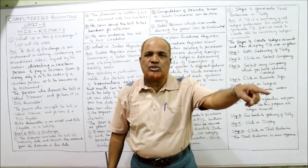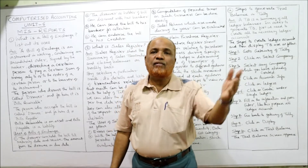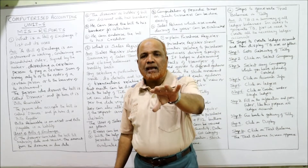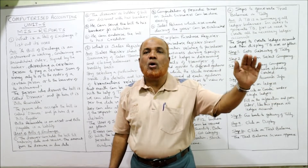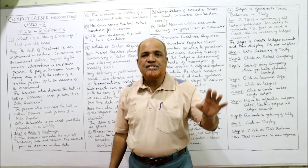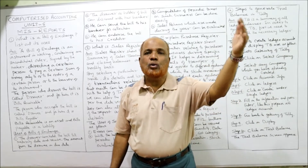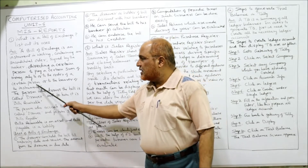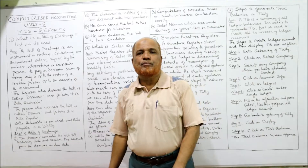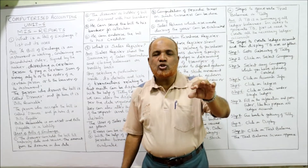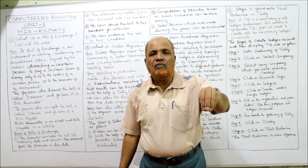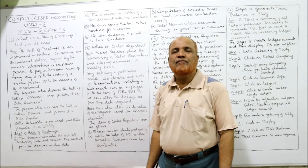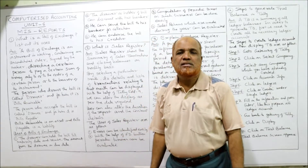A is directing B that a certain amount should be paid on a certain date to C, or to the order of C. That means B can pay either to C or to whoever C orders. If C orders the amount to be paid to D, then B should pay D. Or the amount may be paid to the bearer of the instrument — whoever brings the bill, it should be paid.